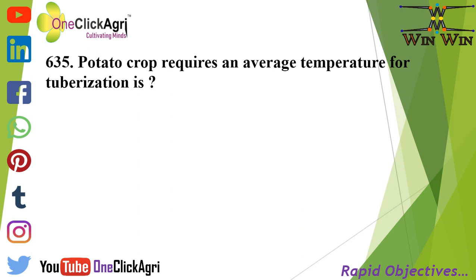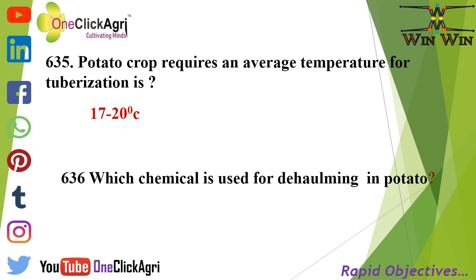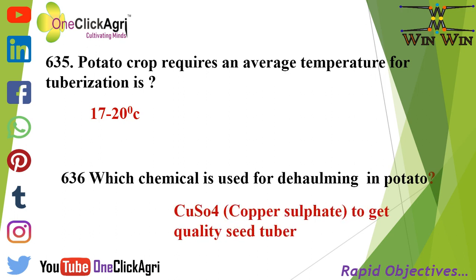Potato crop requires an average temperature for tuberization of 17 to 20 degrees Celsius. The chemical used for deholming in potato is CuSO4 (copper sulphate) to get quality seed tuber.